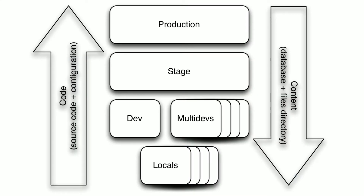I use this diagram in most of the classes I teach: code flows up, data flows down. You should never be making a code change on stage and pulling it into your local. Similarly, you should never be taking your local database and copying it up to production. This idea of content flows down, code flows up is really paramount to making sure we have a solid developer workflow that supports configuration management.